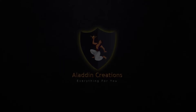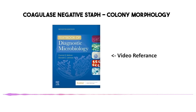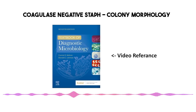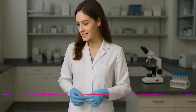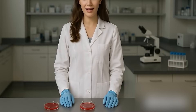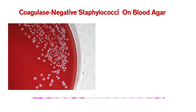Our mission is to unpack those key visual clues for CoNS on common lab media. Understanding these visuals — the colony appearance — is just so practical. CoNS can be tricky; they're everywhere, very common. Being able to quickly assess what's on the plate is a fundamental skill that really speeds things up. Let's jump in. First stop, almost always, is blood agar — sheep blood agar, SBA.